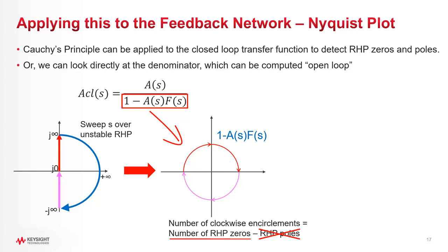Or, just to make it really confusing, some folks out there like to look at just the AF term, and count how many encirclements of one there are instead of zero.